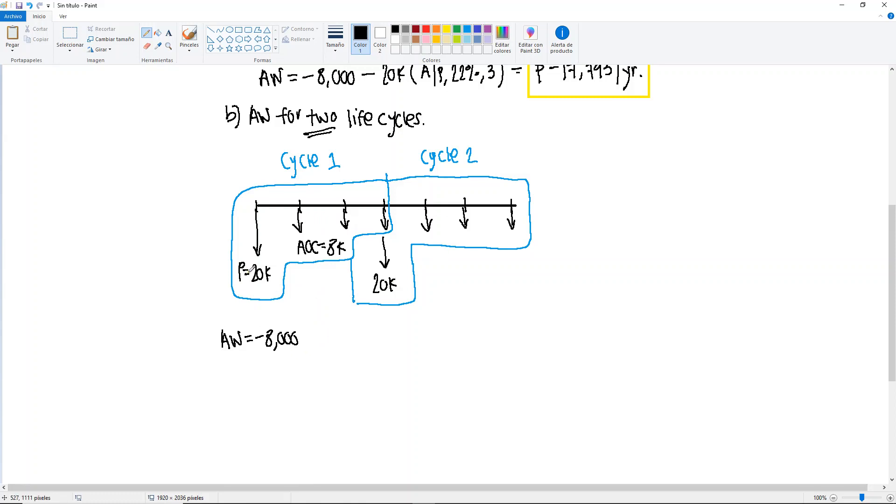Then let's distribute this one amongst all six years. So it's kind of as if we are dividing the P by six, but we cannot just do 20,000 divided by six because we have interest accrued. So that's why we need to use the factor. So it's going to be minus 20,000, find A given P, 22%, and don't forget that here we want to distribute it equally among six years.